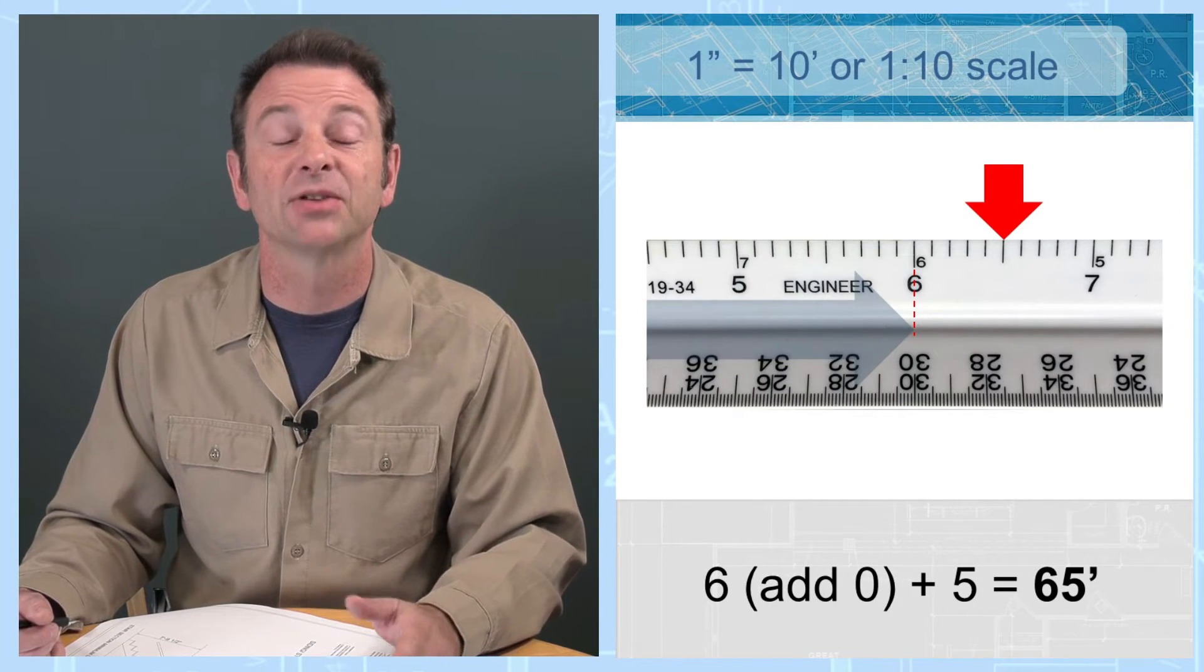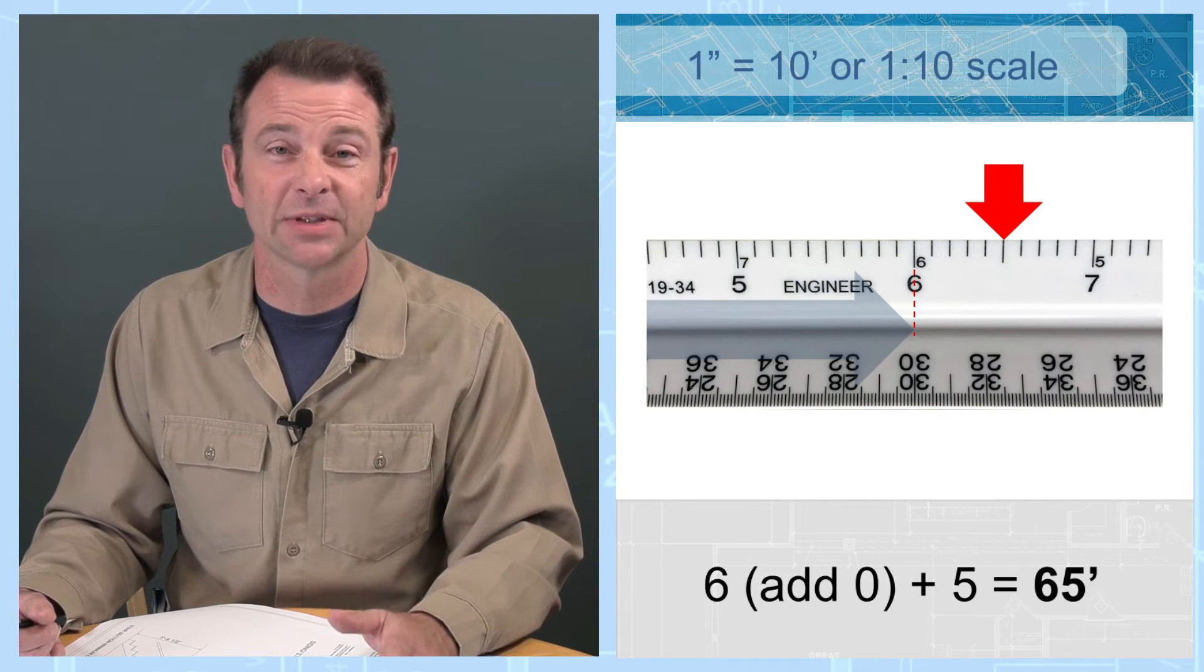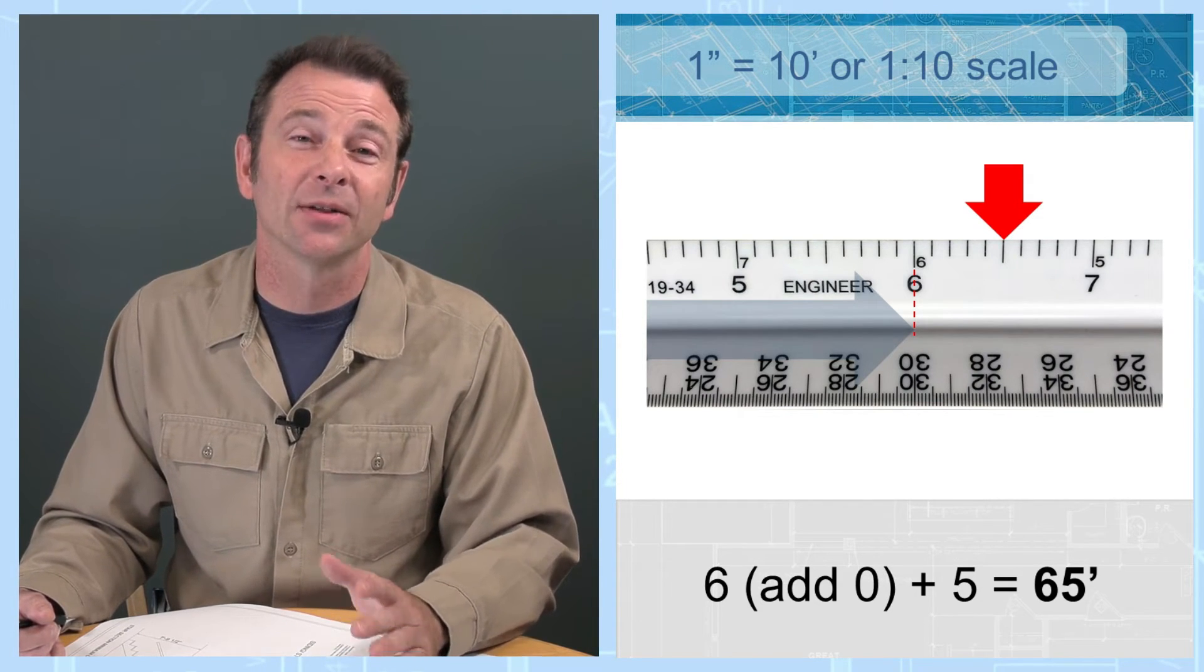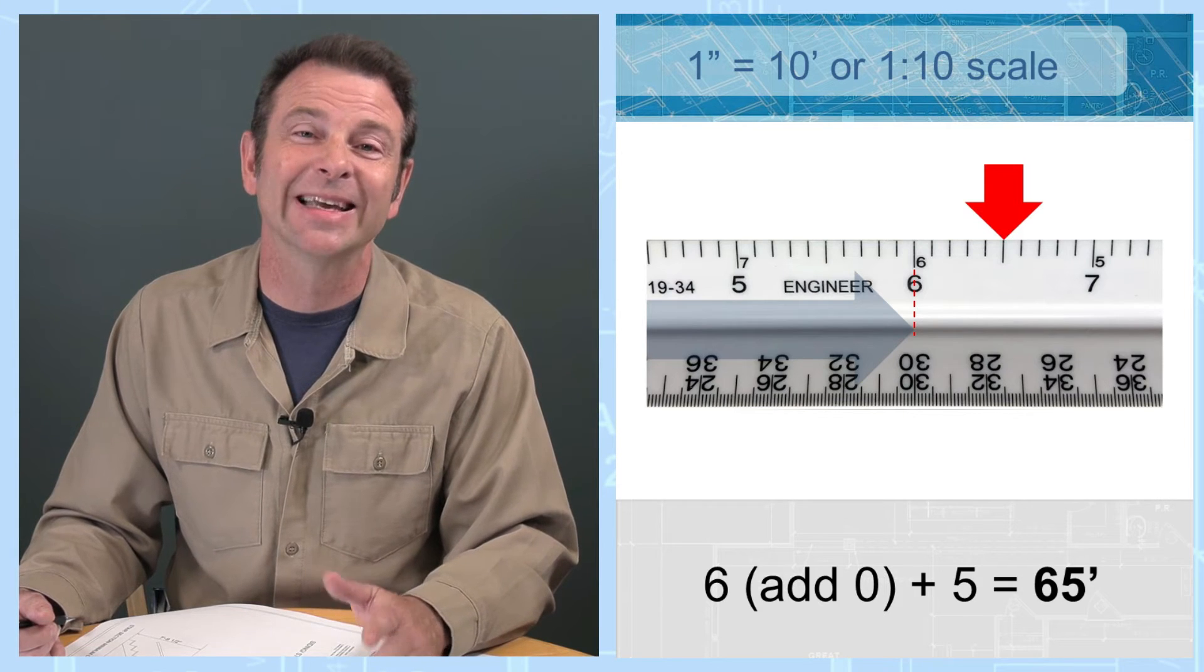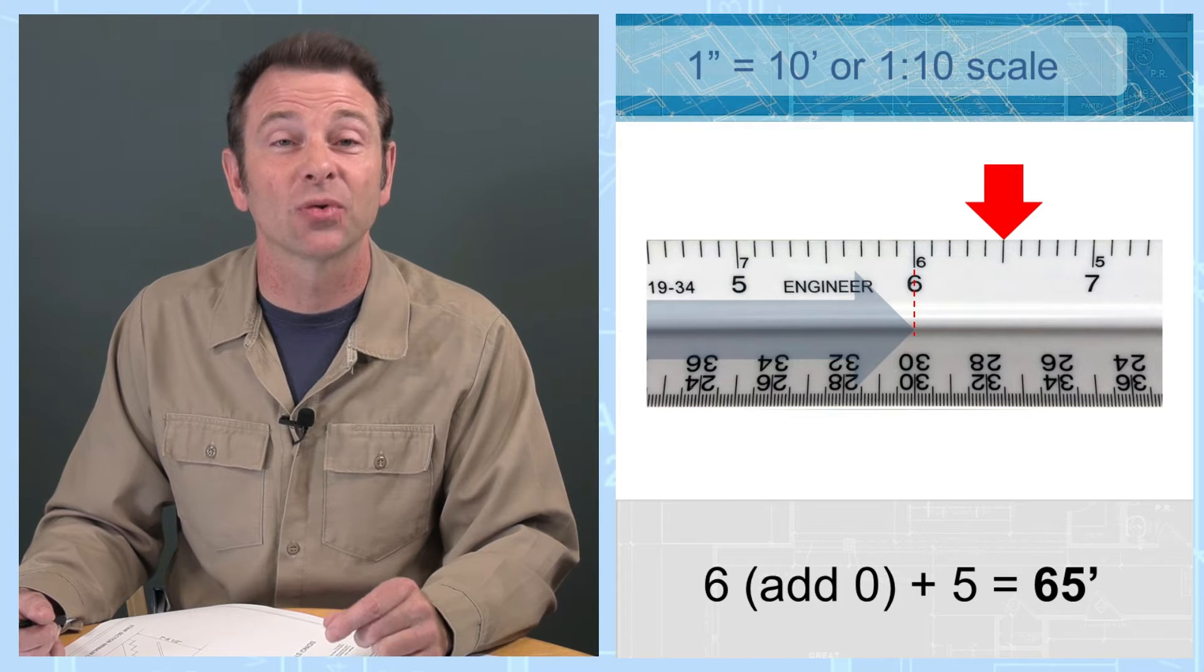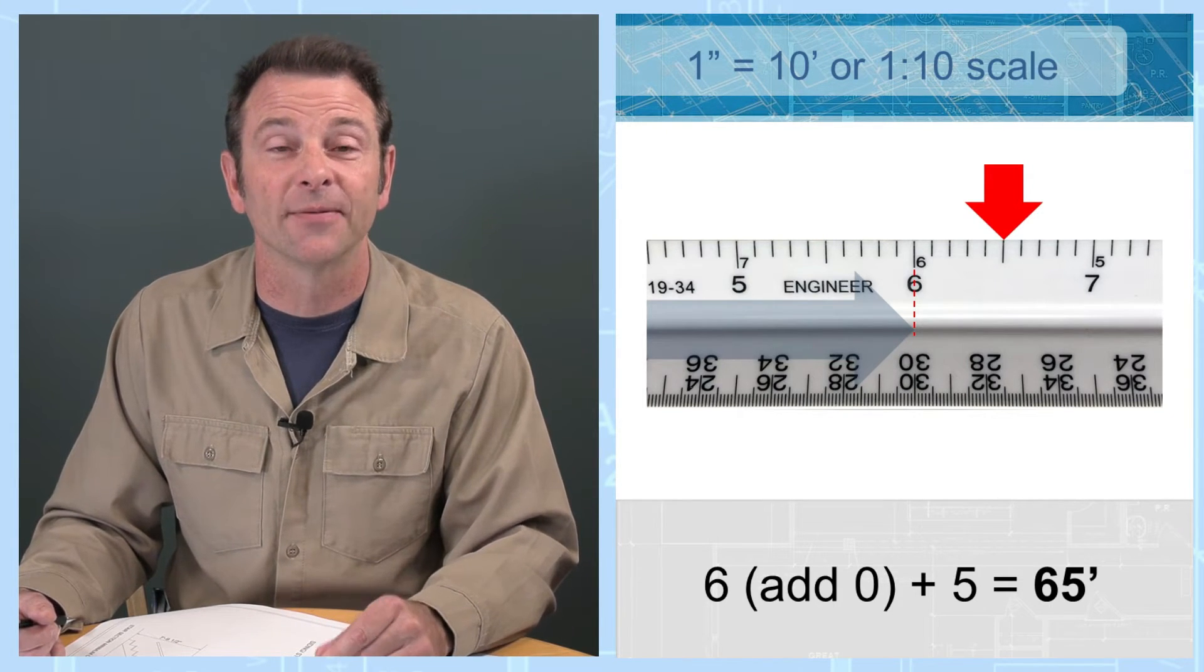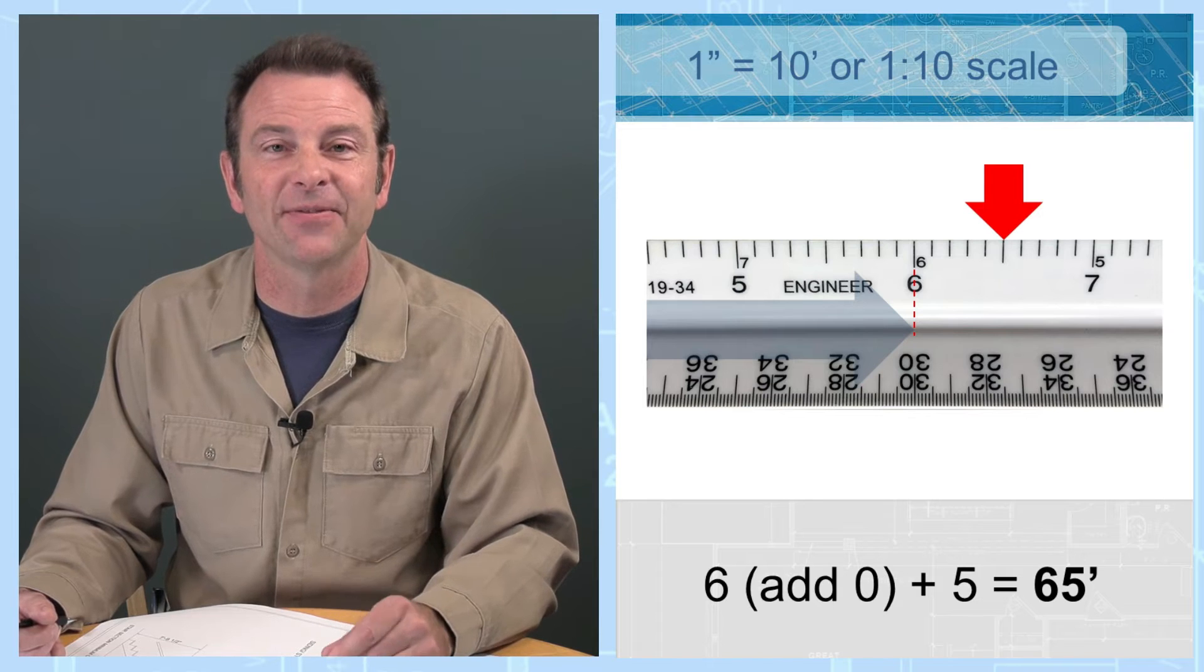Let's go through three different measurements using three different scales. Starting with one inch equals 10 feet. We're looking at our last whole mark is six. We'll add a zero to that, that's 60. And then we'll count each mark beyond that 60 for a total of five marks, that's 65 feet.